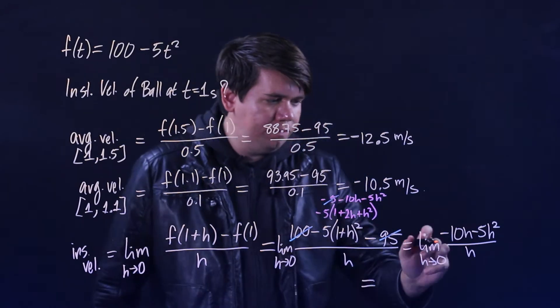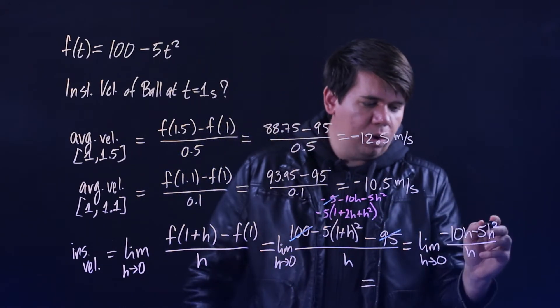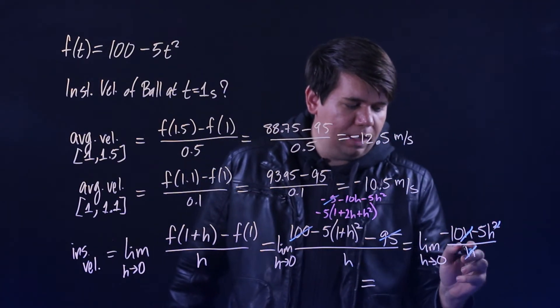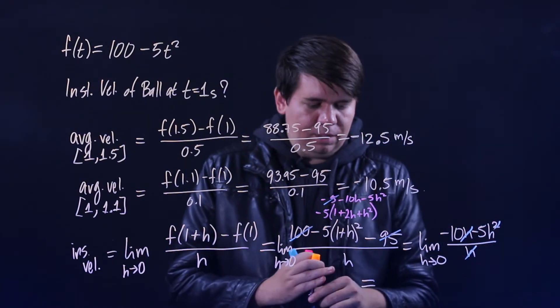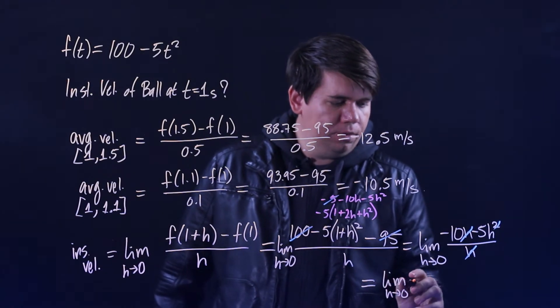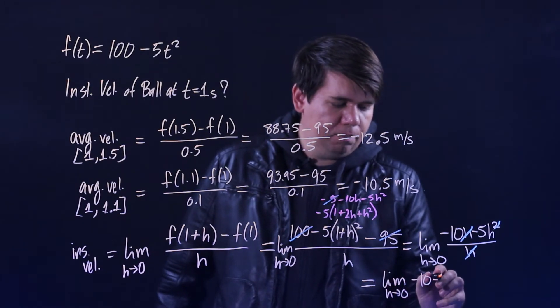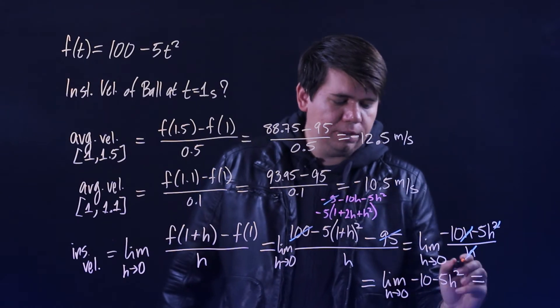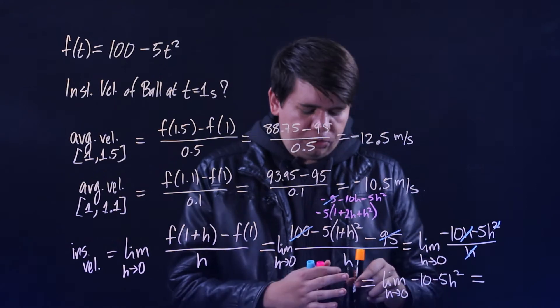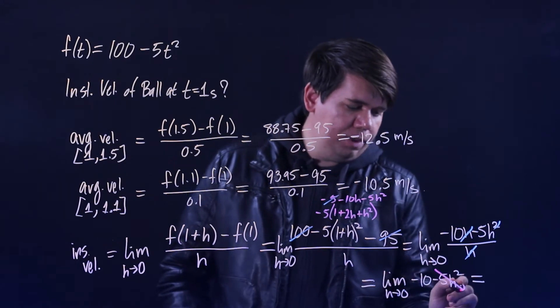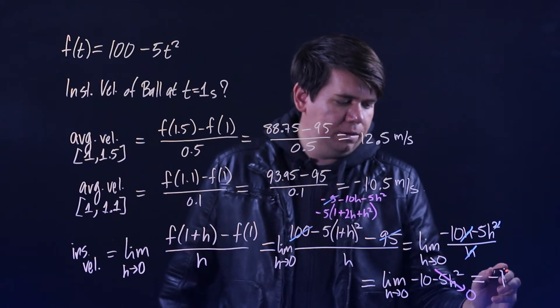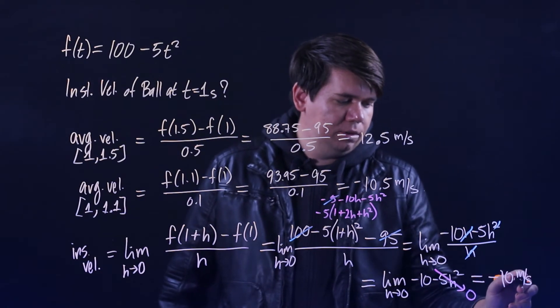But of course you can further simplify this. This h on bottom, you can pull out one of the h's on top, then cancel that h you pulled out with the h on bottom, leaving you with just the limit as h goes to 0 of -10 - 5h². Letting h go to 0, that whole 5h² piece is going to go to 0, leaving you with just minus 10 meters per second.